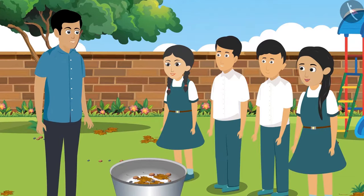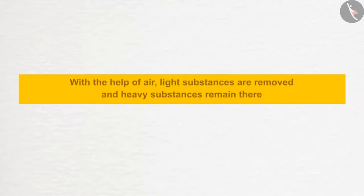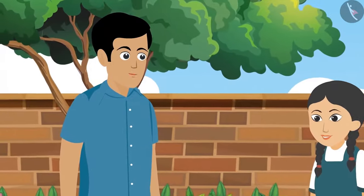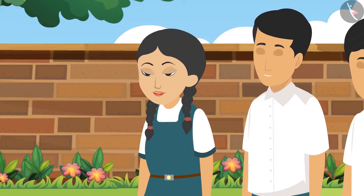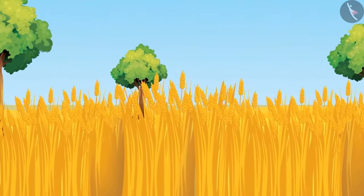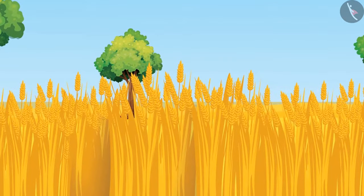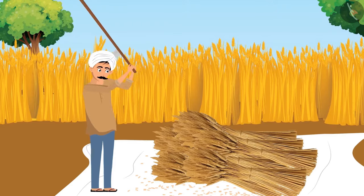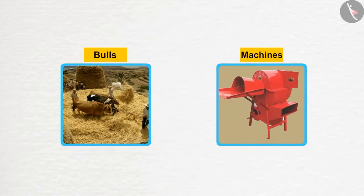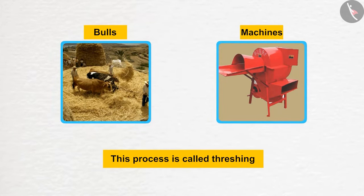Can anyone explain what happens in this process? Rohit bhaiya, with the help of air, light substances are removed and heavy substances remain. Aman is right. This process is mostly used to remove impurities from crops. And what is the process of threshing? You must have seen the wheat or rice fields. The grains of wheat or rice are dried in the sun, tied in a bundle, and then beaten up. During this time, the grains are separated from the plant. This process is sometimes done with the help of bulls or machines. This process is called threshing.